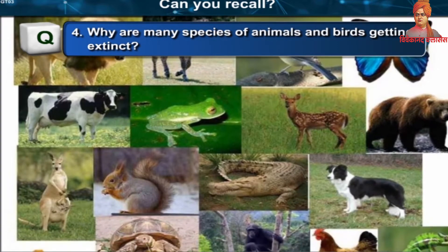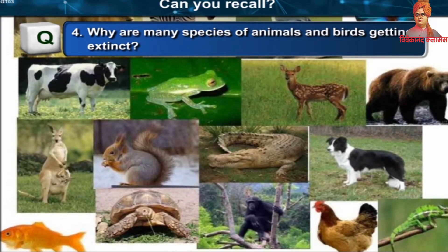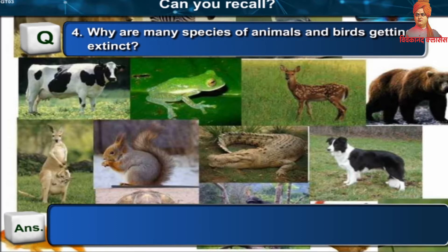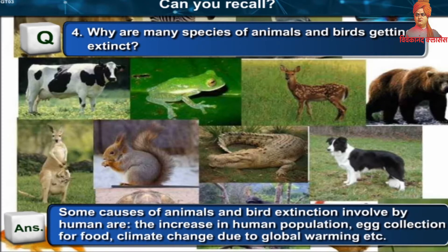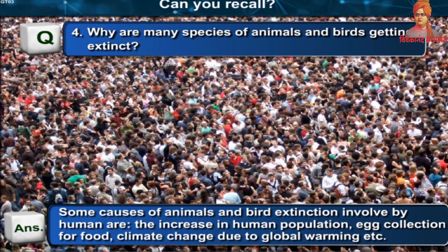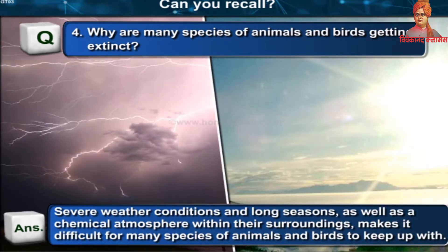Why are many species of animals and birds getting extinct? Human activity is the greatest cause of animal and bird extinction. Causes include the increase in human population, egg collection for food, climate change due to global warming, severe weather conditions, and chemical atmosphere within their surroundings, making it difficult for many species to keep up.